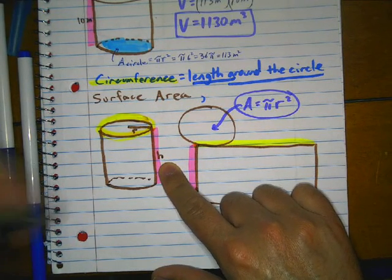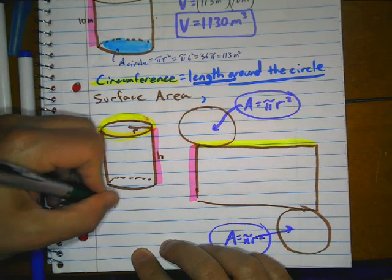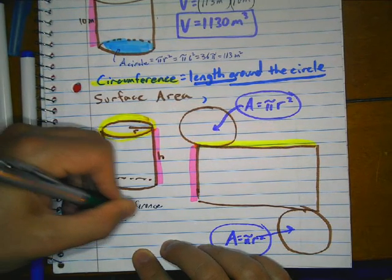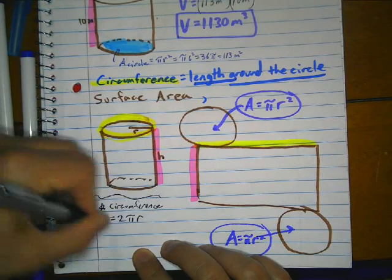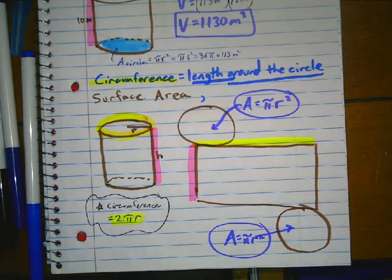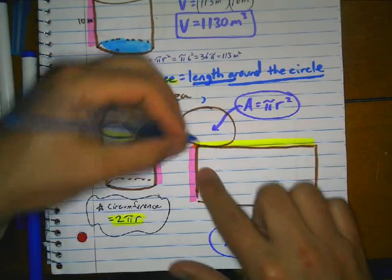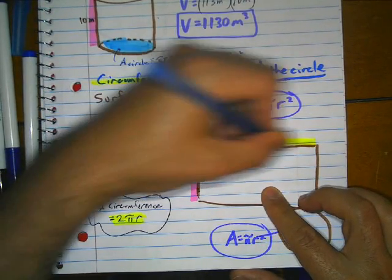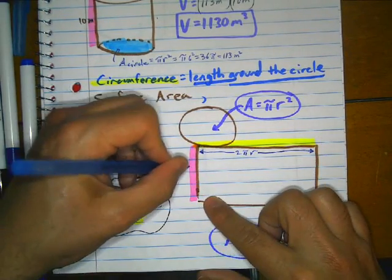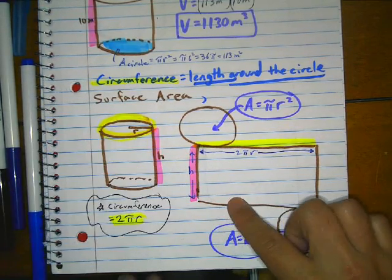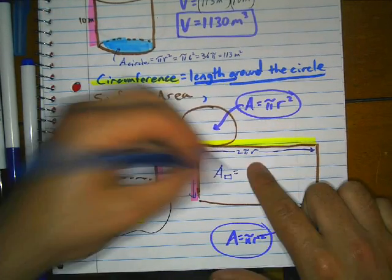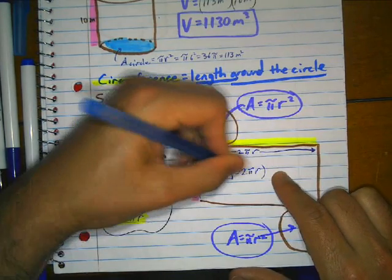The height of that rectangle is the height of the cylinder. Circumference is equal to 2 pi r — this is important because that's the length of the rectangle. So the length across is 2 pi r, and the height is h, making the area of the rectangle equal to 2 pi r times h.